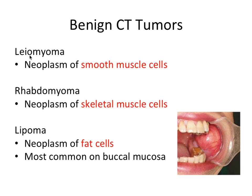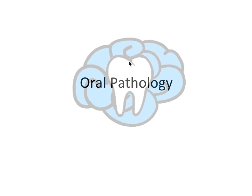We have three more benign connective tissue tumors to wrap up: the leiomyoma, a neoplasm of smooth muscle cells; the rhabdomyoma, a neoplasm of skeletal muscle cells; and the lipoma, a neoplasm of fat cells — most common on the buccal mucosa, often showing a yellowish coloration due to its fatty composition. That's all for this video. Thanks for watching — please leave a like and subscribe for more oral pathology and other dentistry content, and I'll see you in the next video.